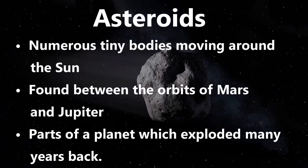Asteroids — we often hear about them. What are they? They are numerous tiny bodies found between the orbits of Mars and Jupiter. They are believed to be parts of a planet which exploded many years back.